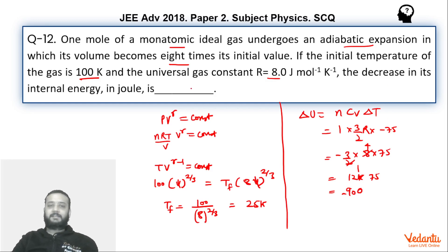Hence we will say 900 is the decrease. If the change would have been asked, then we would have said minus 900. But decrease already means that the negative sign has been taken care of by this word decrease. So we will write the answer as 900.